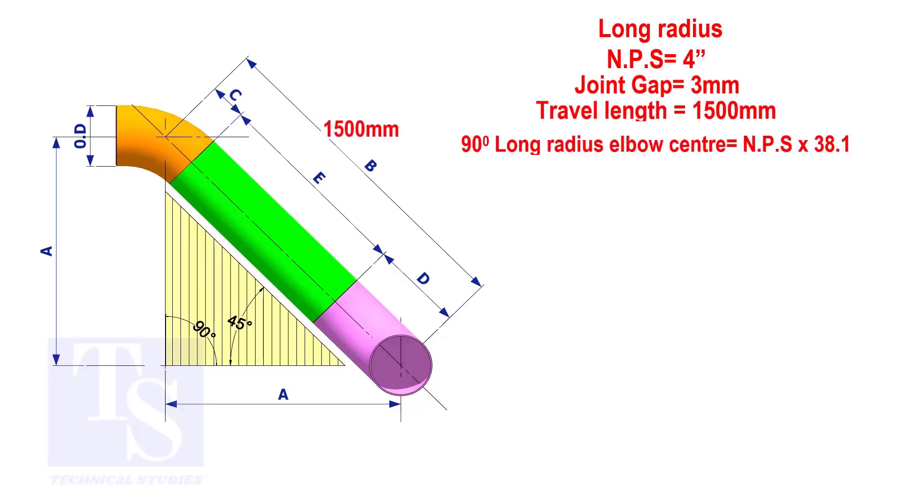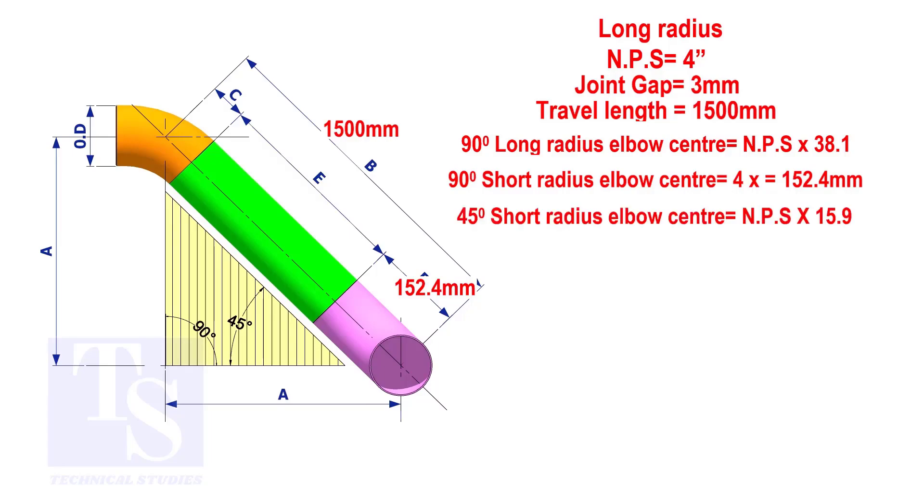The elbow center is the nominal pipe size multiplied by 38.1. So, the elbow center of the 90 degree elbow is 152.4 millimeters. To calculate the elbow center of a 45 degree long radius elbow, multiply the nominal pipe size by 15.9. The answer is 63.6 millimeters.